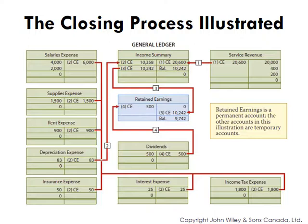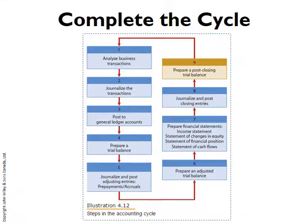Once we've closed the accounts, we've completed the accounting cycle, now that our temporary accounts are reset to zero. We have a trial balance with our permanent balance sheet or financial position accounts, and all of the income statement accounts ready and reset to zero so we can start the cycle all over again for the next period.